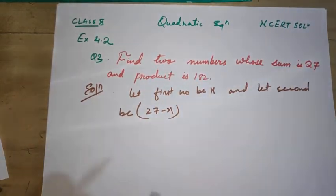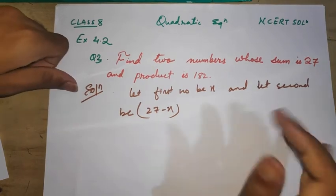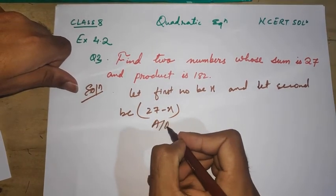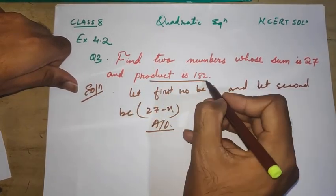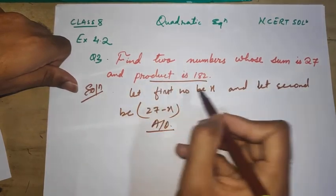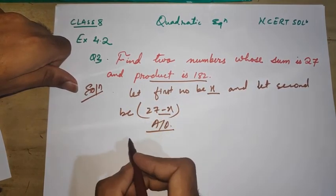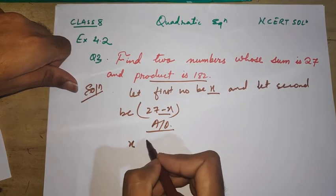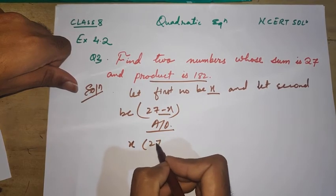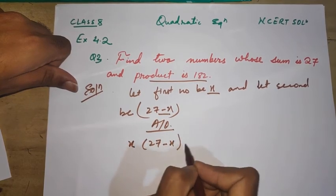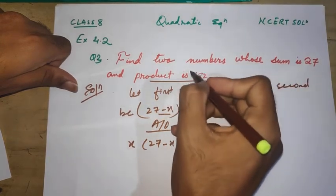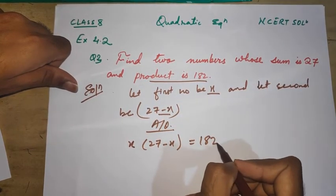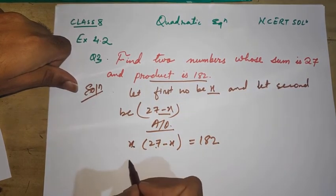Let's see the condition. According to the question, the product is 182. So I'm going to multiply x and 27 minus x.